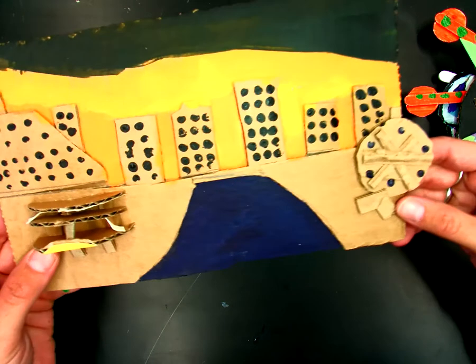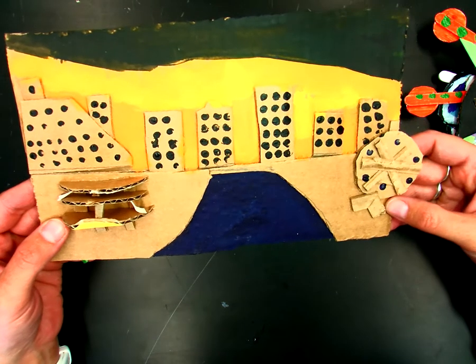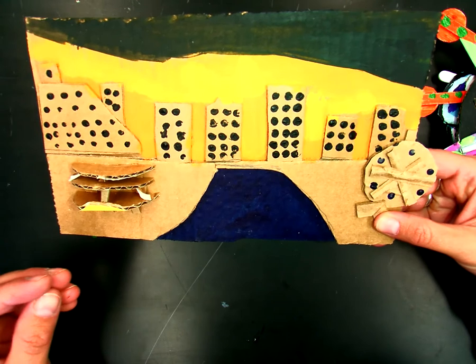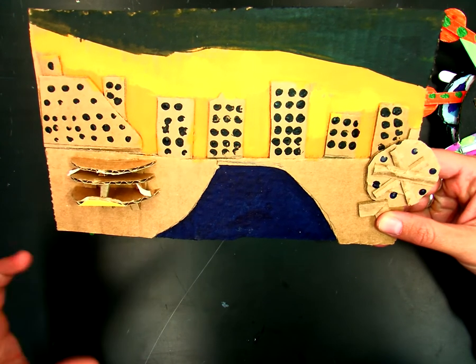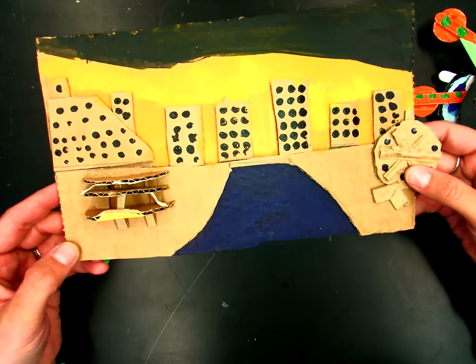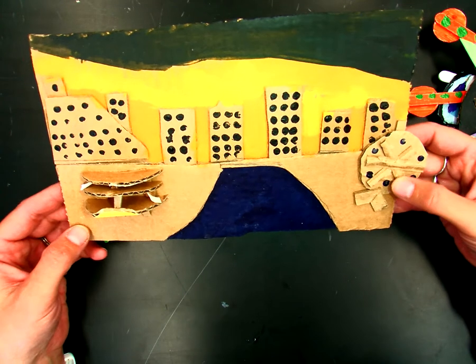Or it could be maybe a place or an animal or something from your imagination. Again, you're still creating, adding at least 20 parts, at least four different heights, four different layers. And then there are some options with adding paint as well.